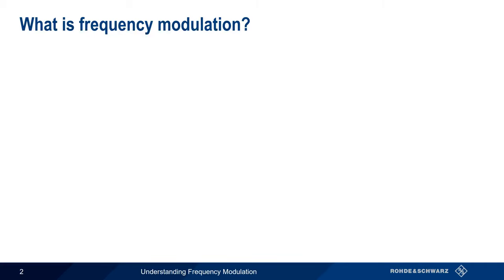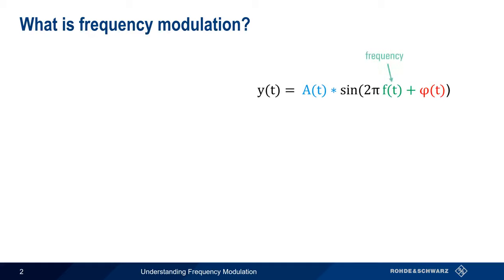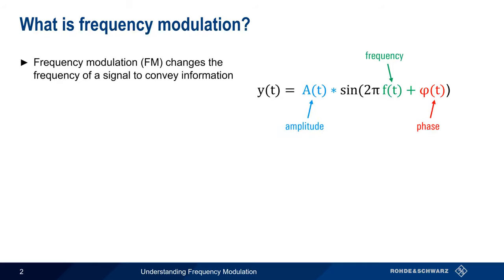Modulation is the process of varying a transmitted carrier in order to convey information. There are three things we can change about a sine wave – its frequency, its phase, and its amplitude. In frequency modulation, or FM, we convey information by changing the frequency of the carrier.